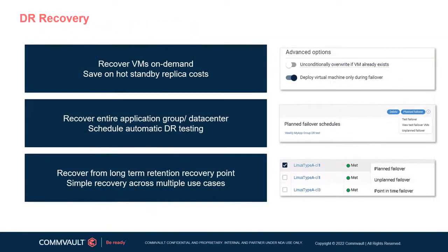We've talked about the various ways of configuring, replicating, and DR testing. When we look at the recovery options, it can be done in a single click, on-demand, for a specific entity or an entire application group or data center with multiple VMs. Commvault can spin up infrastructure in order to support SLAs based on business needs, saving costs and recovering application groups automatically — not just VMs — in the cloud.